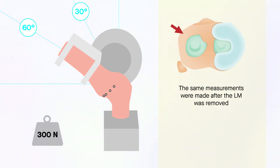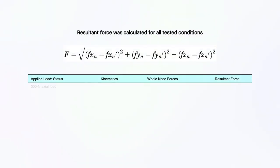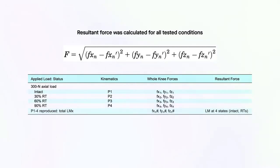The resultant force through the LM was calculated based on the forces in all tested conditions. This resultant force was used to evaluate the effect of each degree of tear on the load transmission function of the LM.